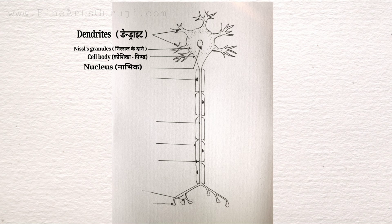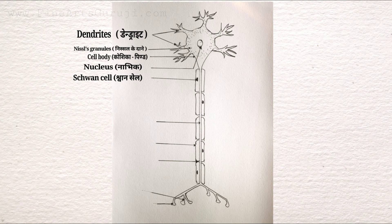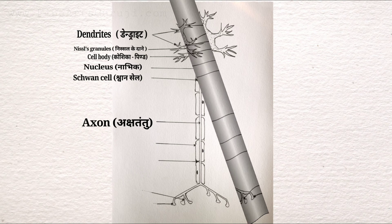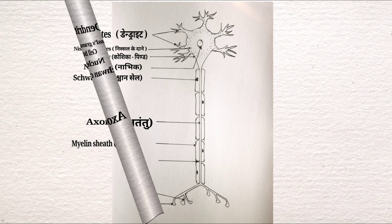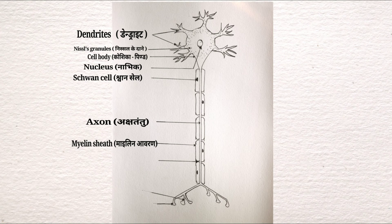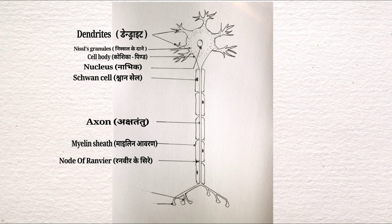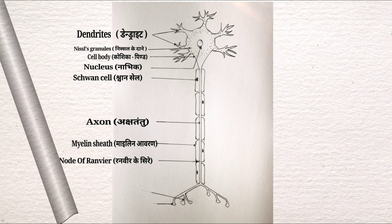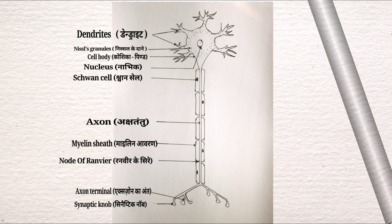Next one is nucleus. Next one is Schwann cell. Jaldi se batao agla kaun sa hai. Yes, this is axon. Now tell me what next. It's myelin sheath. Then after, this one is node of Ranvier. Next one is axon terminal. Let me know what next. It's synaptic knob.